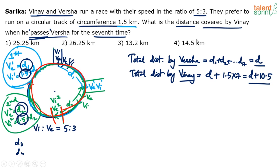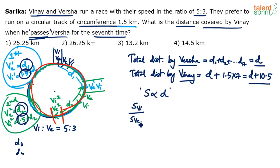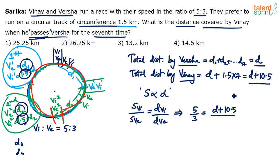The speeds of Vinay and Varsha are in a 5:3 ratio. Since speed is proportional to distance (over the same time), we can write: speed of Vinay / speed of Varsha = distance of Vinay / distance of Varsha. So 5/3 = (D + 10.5) / D.